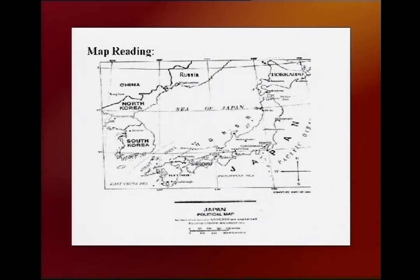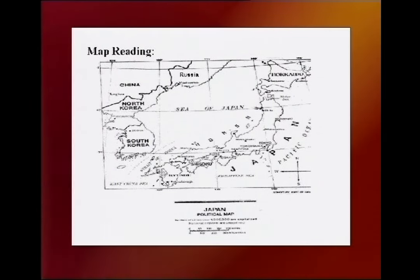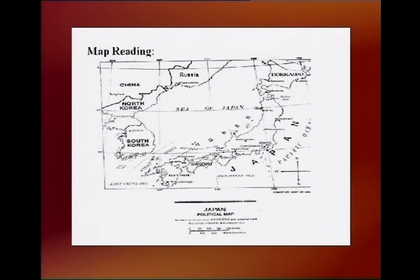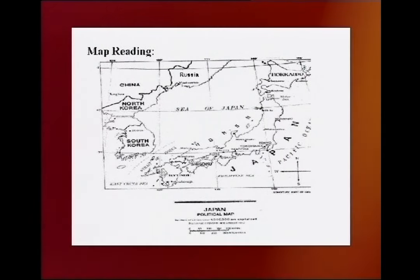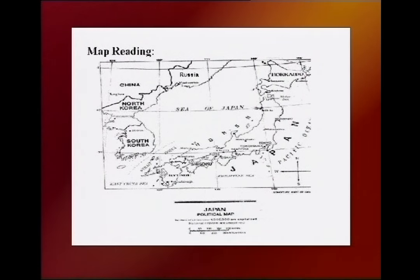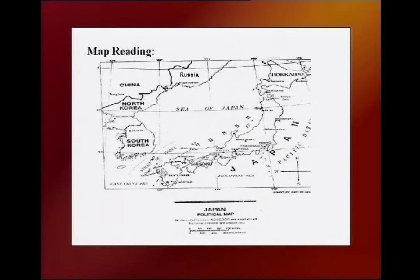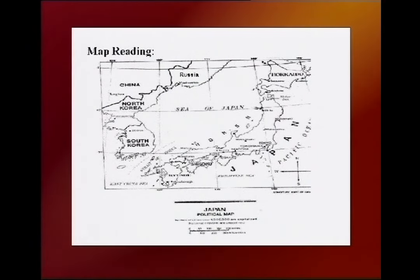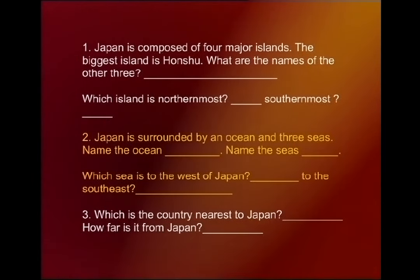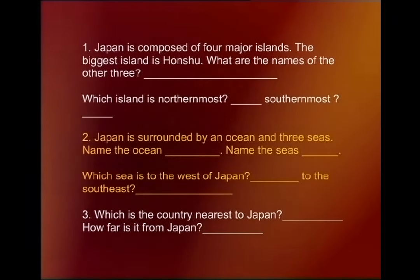The map is about Japan, which is in the far east. If you look at the map, you will notice that it is composed of four major islands. The biggest island is Honshu. Look at the map and write down the names of the other three islands — they are in bold type: Kyushu, Shikoku, and Hokkaido.